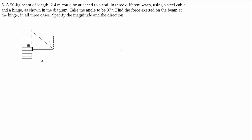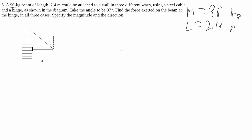Here's number six, part A. We have this beam here. It's connected to this wall with a hinge. This beam is supported by a cable that runs from the edge of this beam to the wall. This tells us a bunch of information: the mass of this beam is 96 kilograms, the length of this beam is 2.4 meters, and the angle is 37 degrees.